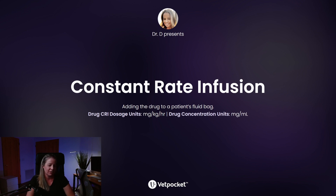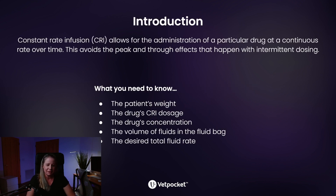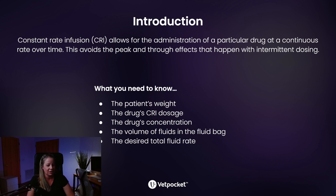In the problem we'll be solving for this video, the drug CRI dosage units will be in milligrams per kilogram per hour, and the drug concentration units will be in milligrams per milliliter. Concentrated infusion, also known as CRI, allows for the administration of a particular drug at a continuous rate over time. What you need to know to solve a CRI problem is the patient's weight, the drug's CRI dosage, the drug's concentration, the volume of fluids in the fluid bag, and the desired total fluid rate.